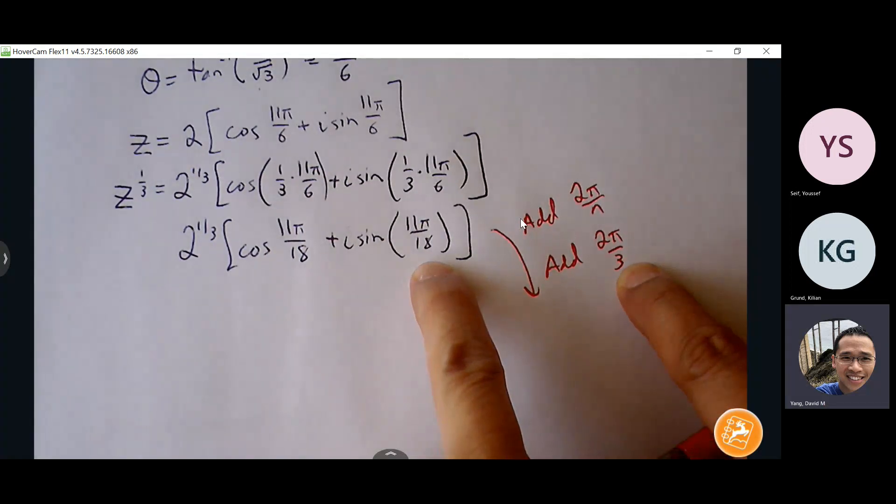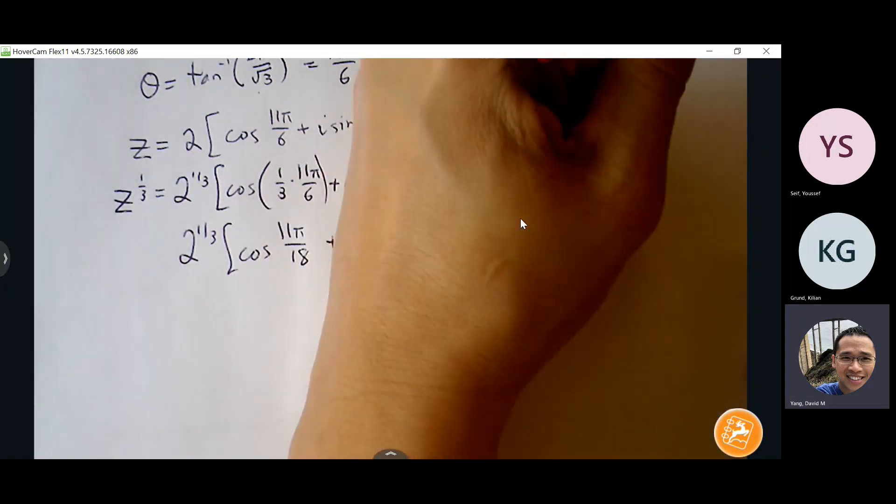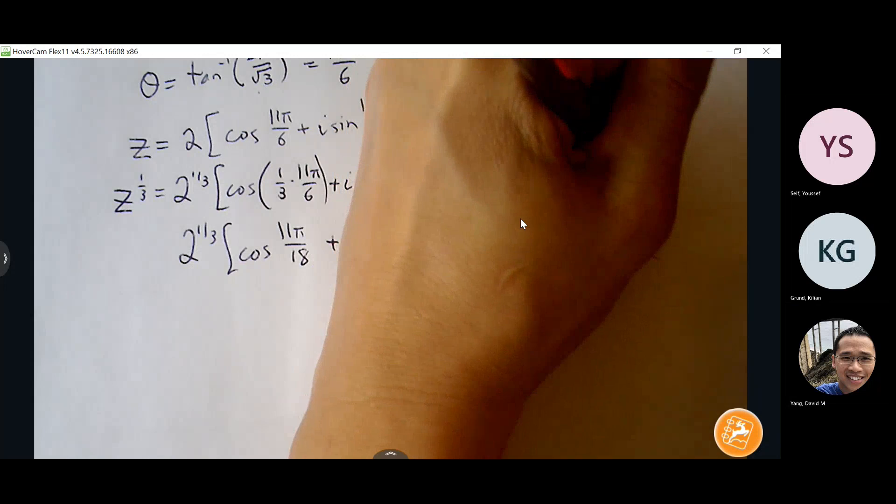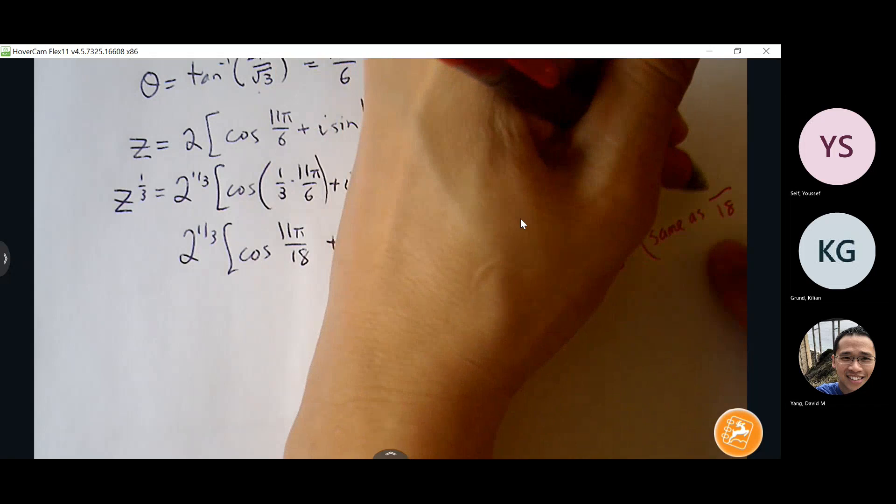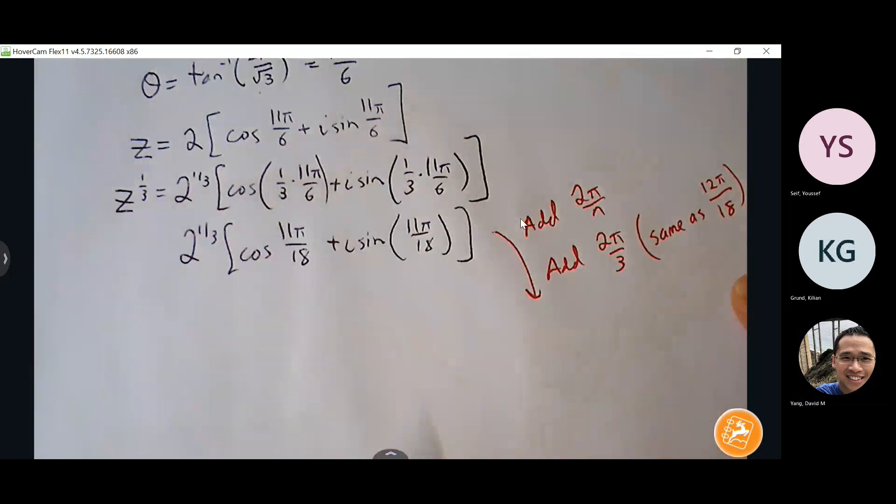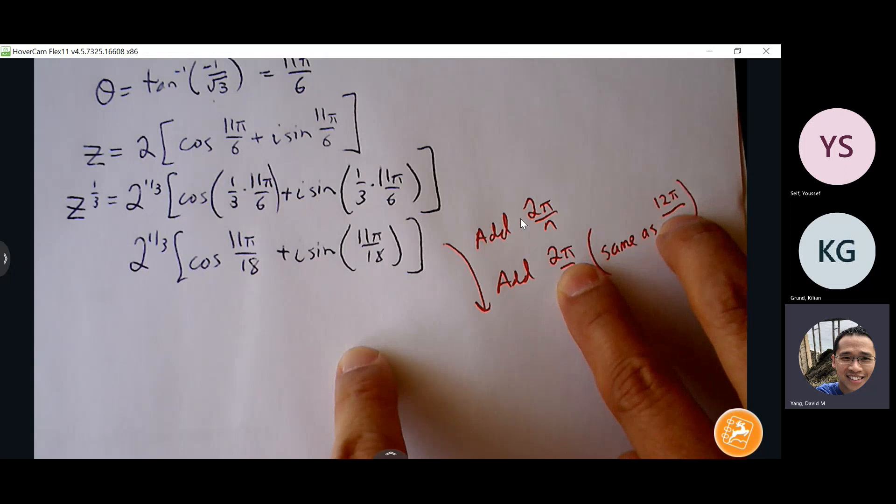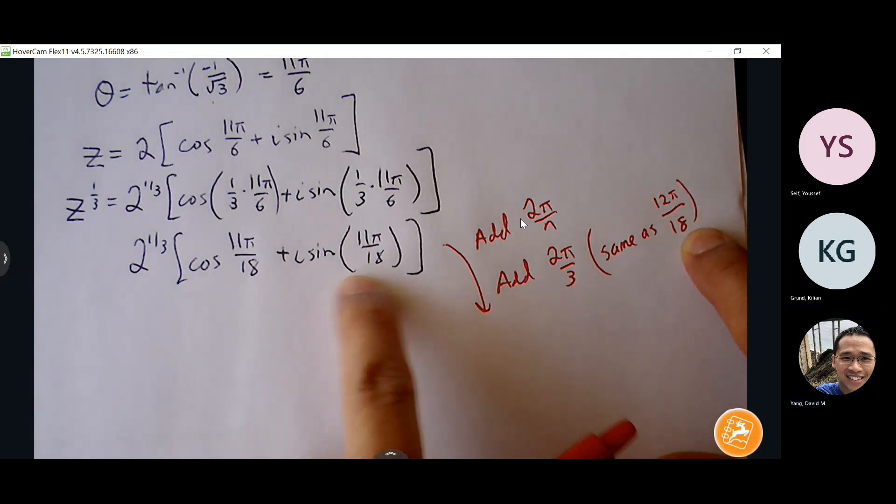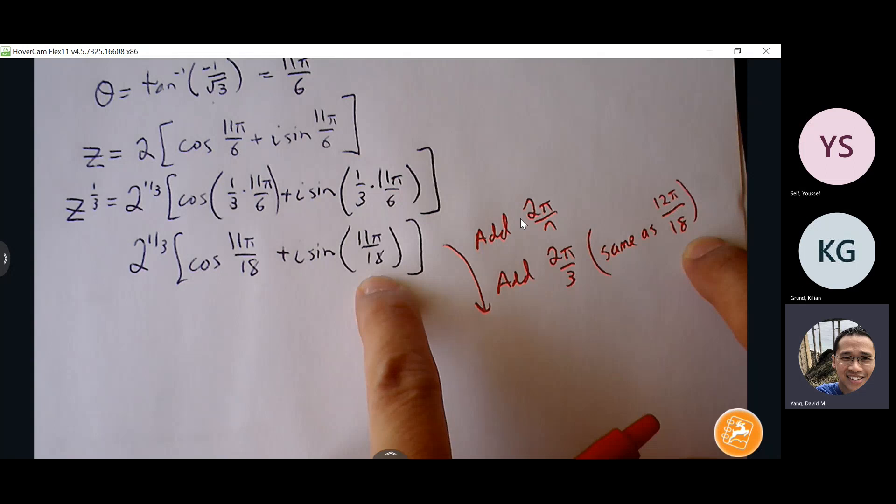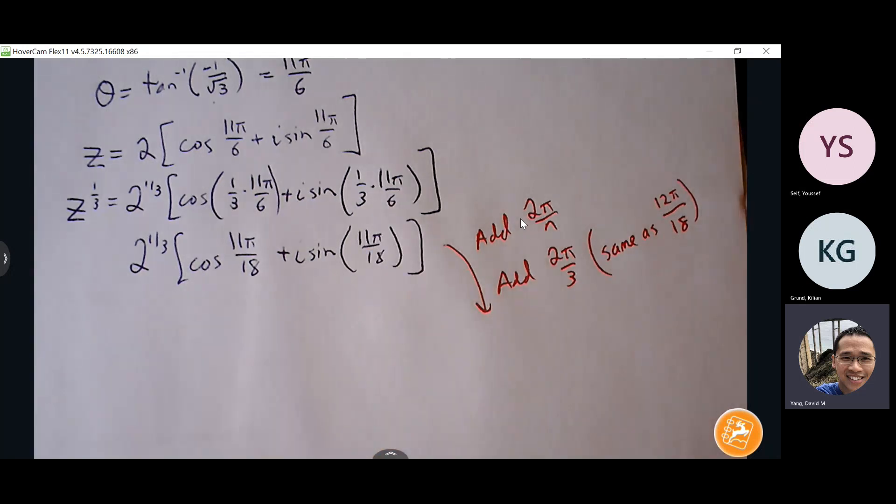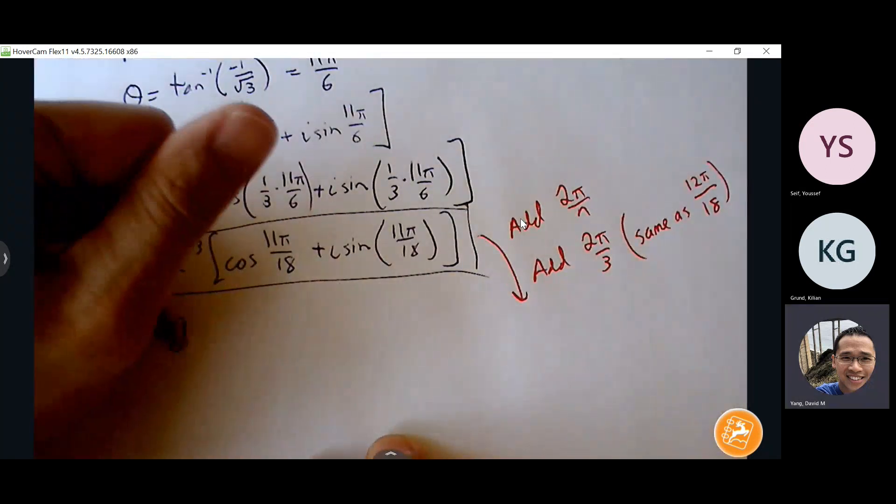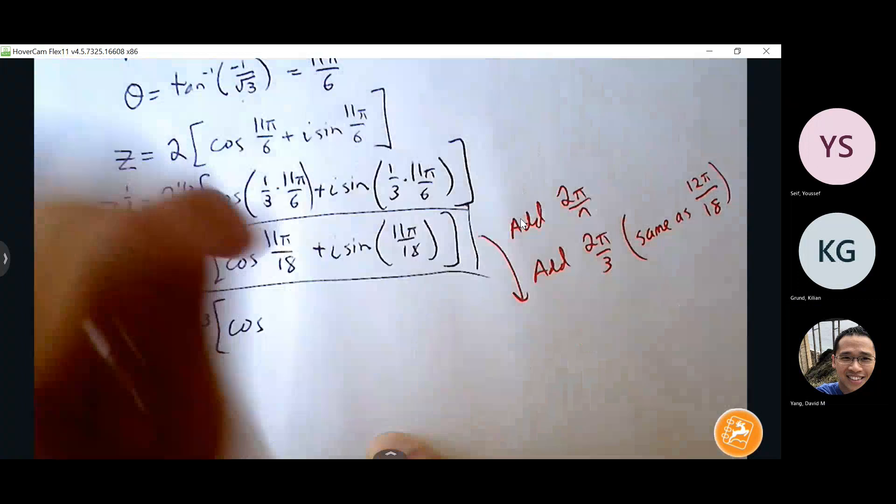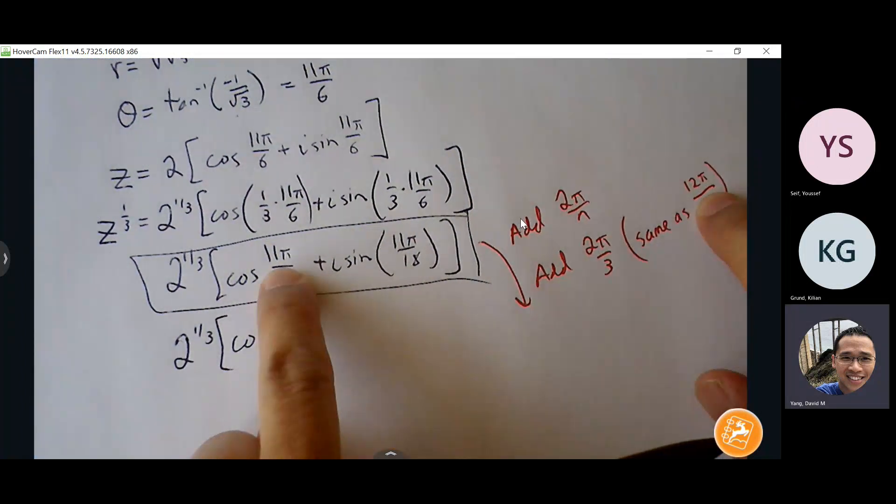I'm going to find common denominators that make it easier for me since we're doing this without a calculator. So plus 2 pi over 3 is the same as... 2 pi over 3. Alright, 3 times 6 is 18, 2 times 6 is 12, so I'm just going to keep adding 12 pi over 18 until I get to all three of my solutions. So I have one solution here, second solution, 2 to the one third, so 11 plus 12 is 23.